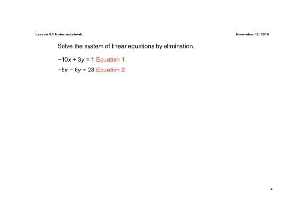Alright, let's look at another example here. This time it's not quite as simple. This is where we need to multiply one or both of them by a constant, because we don't have a variable that's going to drop out. They don't set us up on this one. So what we need to do is figure out which variable we can eliminate easily.